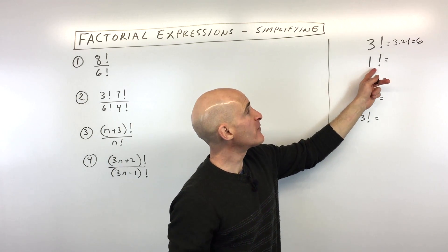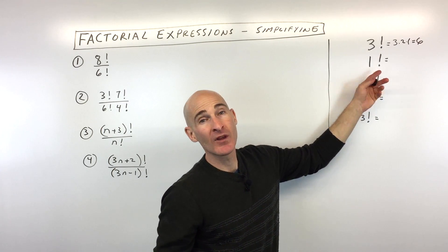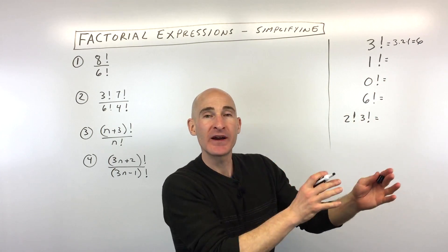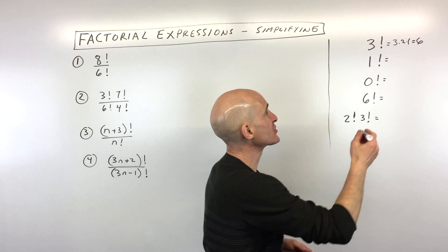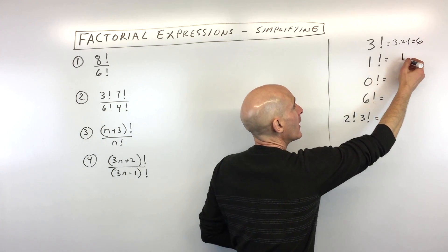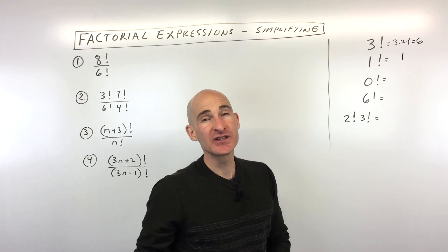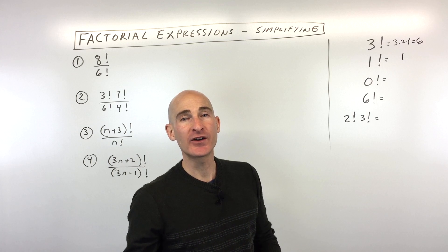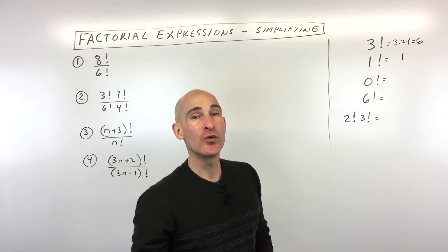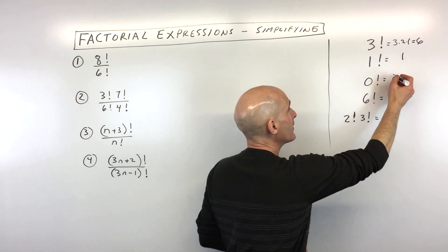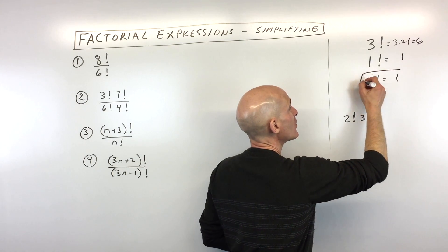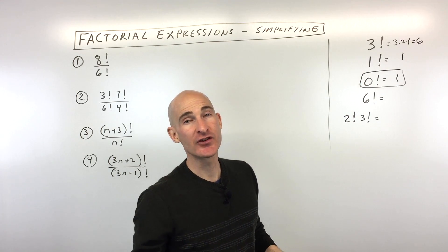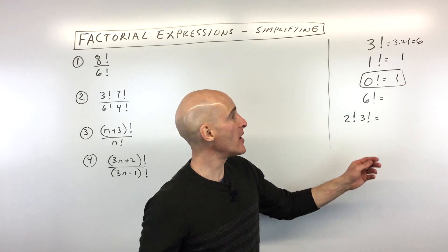Let's look at another example: one factorial. This one's already at one, so when multiplying down to one, it's just going to be one. Now zero factorial — this is one you're going to have to memorize. Zero factorial just equals one. A lot of times students make the mistake of thinking it's zero, but it's actually one.